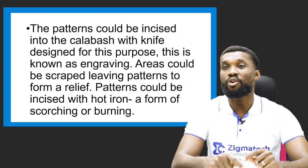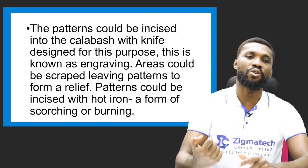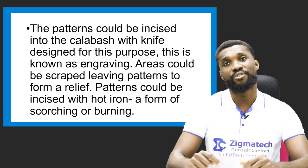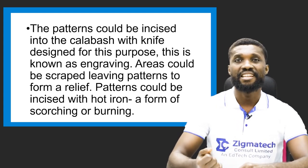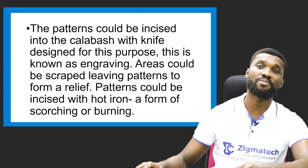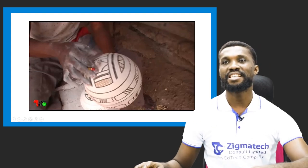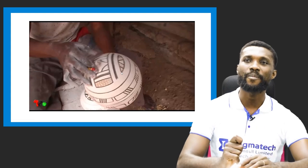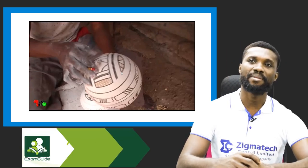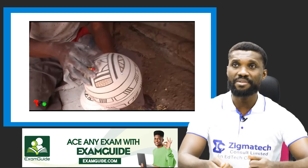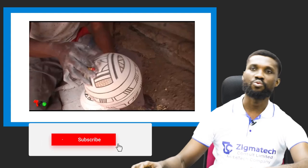Patterns could also be incised with hot iron, which is a form of scorching or burning. You can use a soldering iron — those used by electricians who repair radios — to create incised burning on the calabash and it comes out very loud and effective. Here a man has polished the calabash and is taking his time to make detailed intricate designs, and he may choose to use engraving or the painting method depending on what he wants to achieve.